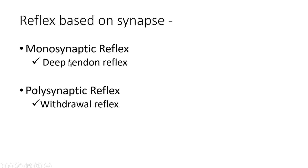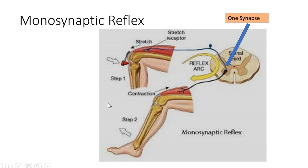Now we should know the types of reflex. Depending on the synapse involved, reflexes can be divided into two types: monosynaptic reflex and polysynaptic reflex. Monosynaptic reflex involves only one synapse — for example, deep tendon reflexes such as knee jerk reflex, bicep jerk, tricep jerk, and supinator reflex. Polysynaptic reflex involves many synapses — for example, the withdrawal reflex. We will study both of these one by one.